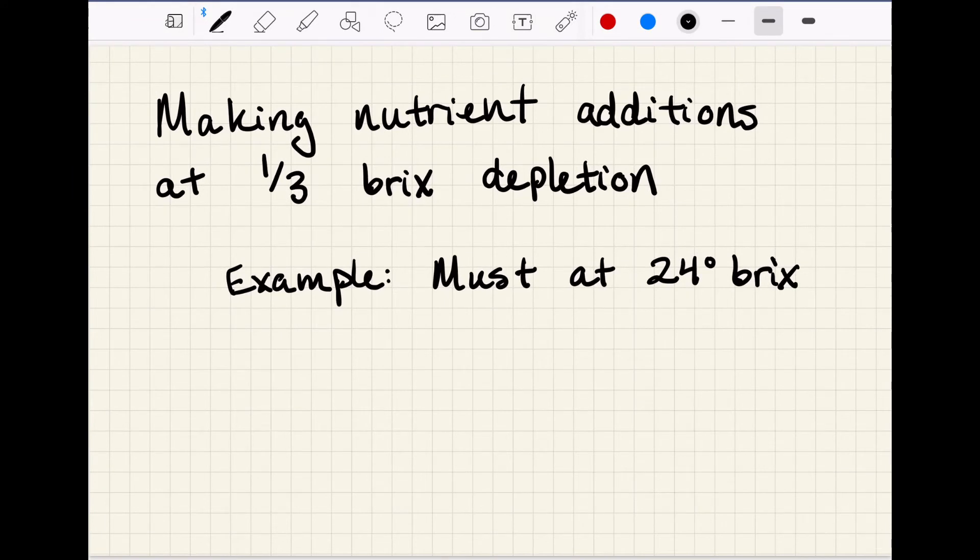So why do we care so much about rate calculations anyway? The first reason is because if a nutrient addition is required, it's typically recommended to make that addition at one-third bricks depletion. So if you have a must starting at, let's say, 24 degrees bricks, one-third of that is 8 bricks and 24 minus 8 is 16.